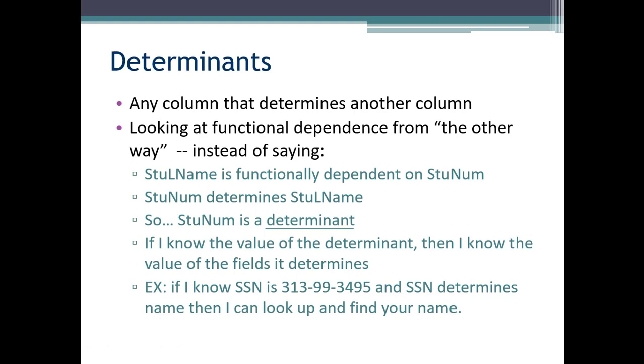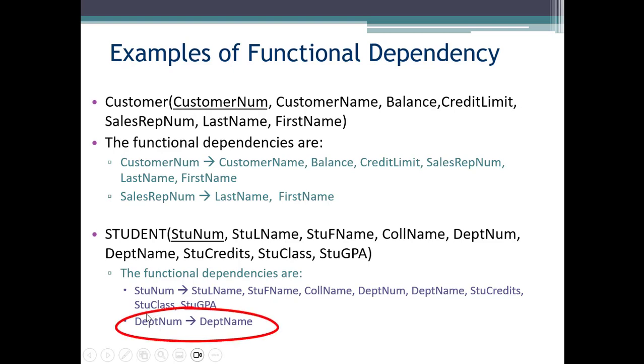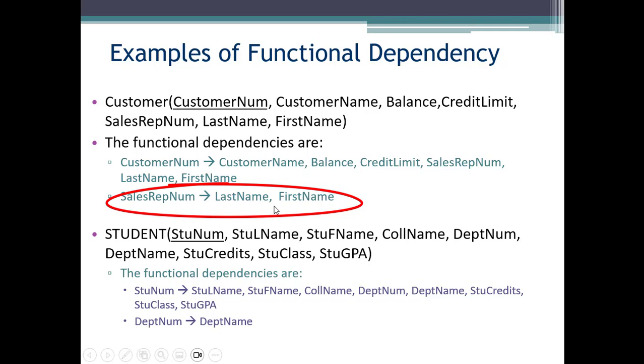Let's define determinant. That is any column that determines another column. It's just the opposite way of looking at that expression for functional dependence. So we said maybe student last name is functionally dependent on student number. Looking the other way, you can say student number determines student last name. So student number is a determinant. This expression can be said: department number determines, using that arrow, department name. Sales rep number determines last name and first name.